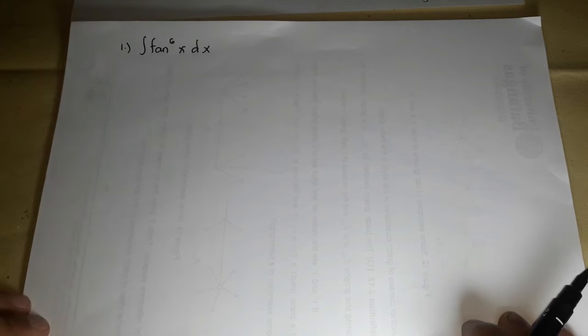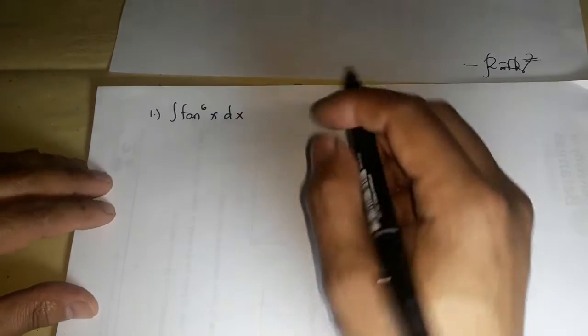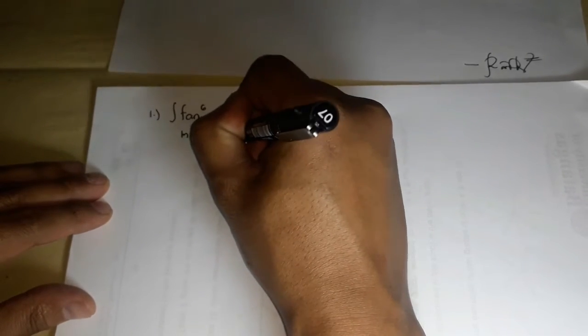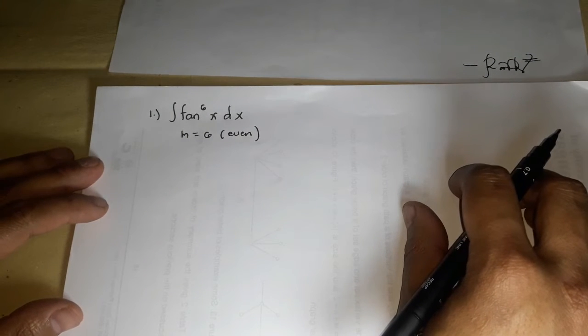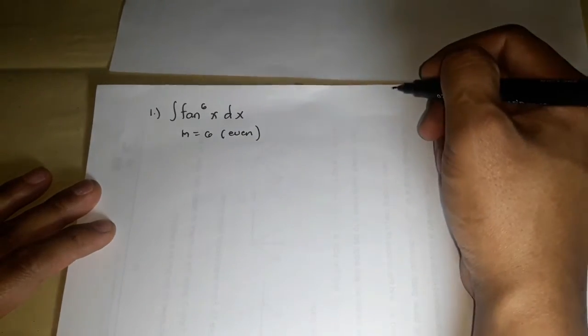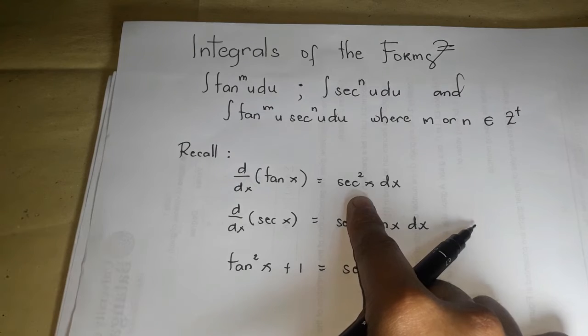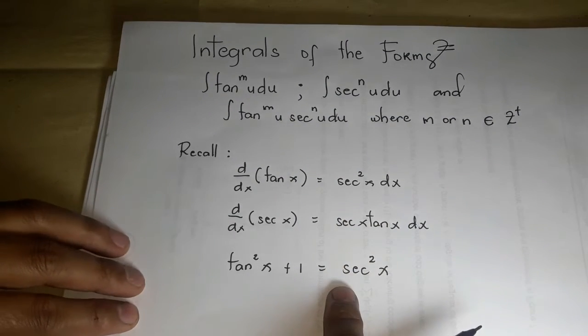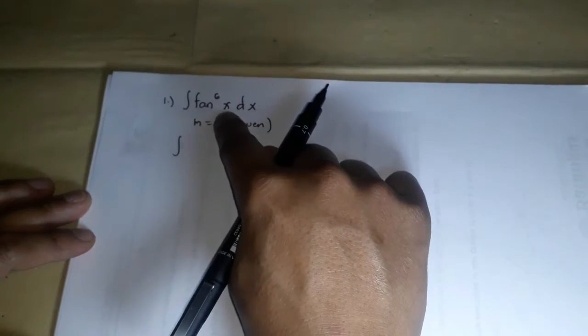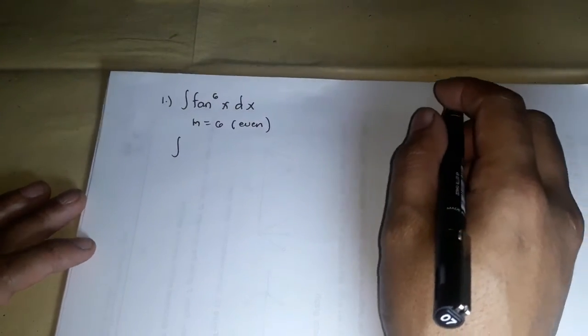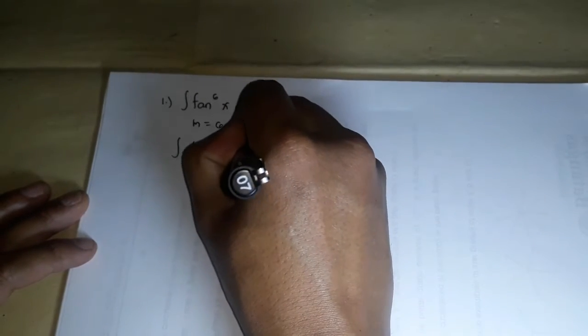Let's have some examples. Say we want to integrate tangent to the 6th power of x dx. By principle, we take the case where the power of tangent m is equal to 6, which is an even positive integer. We know that the derivative of tangent x is secant squared x, so when you see a tangent function in the integrand, you need to look for a secant squared that will go along with dx. We will be using the identity tangent squared x equals secant squared x minus 1. So tangent to the 6x is factored as tangent to the 4x times tangent squared x dx.